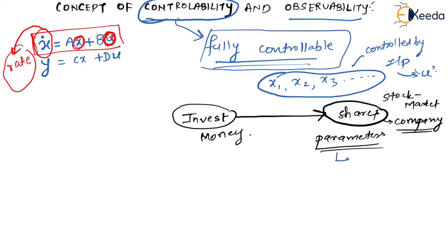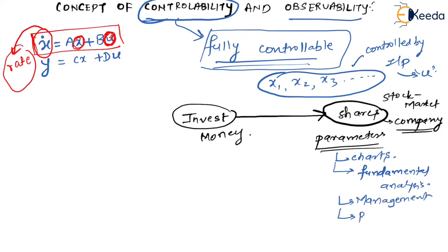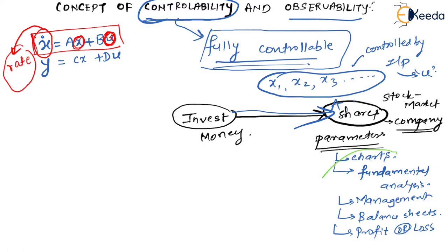For example, you may see some charts, or you may do some fundamental analysis — what is the management of the company, is it good or not, or some balance sheets of the company, whether it is in profit or in loss. You saw all those things and then you said, yes, now I will invest my amount in this particular share — let us say Share A. Let me call these parameters the states: X1, X2, X3, X4, and so on.